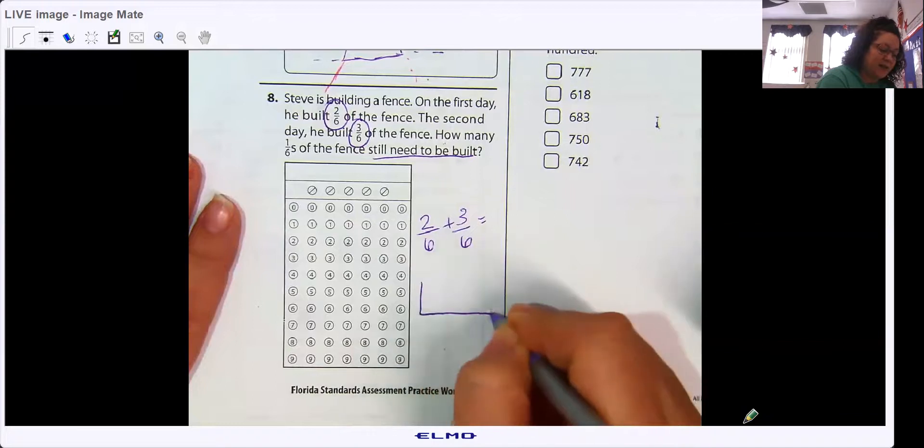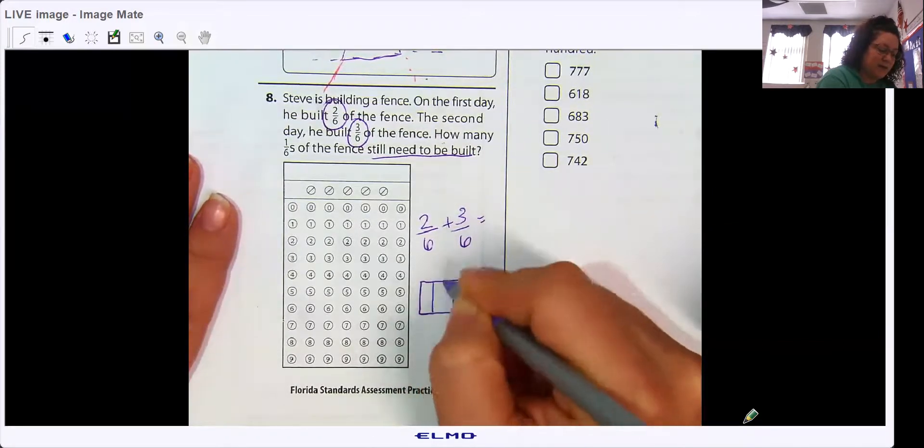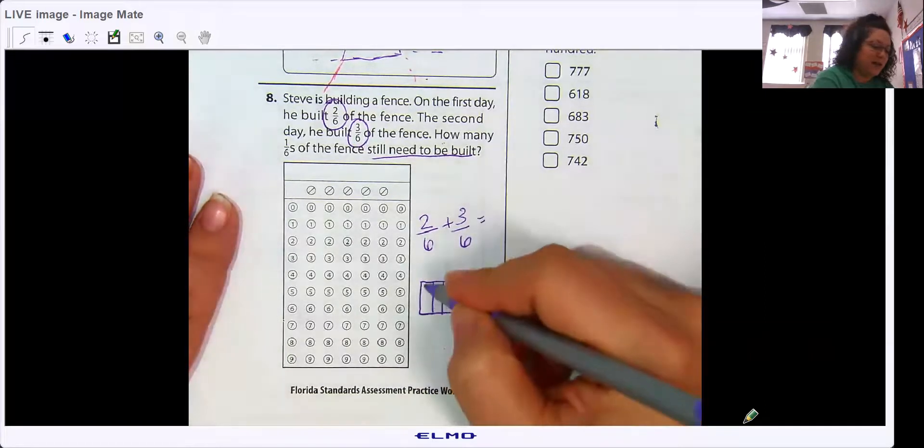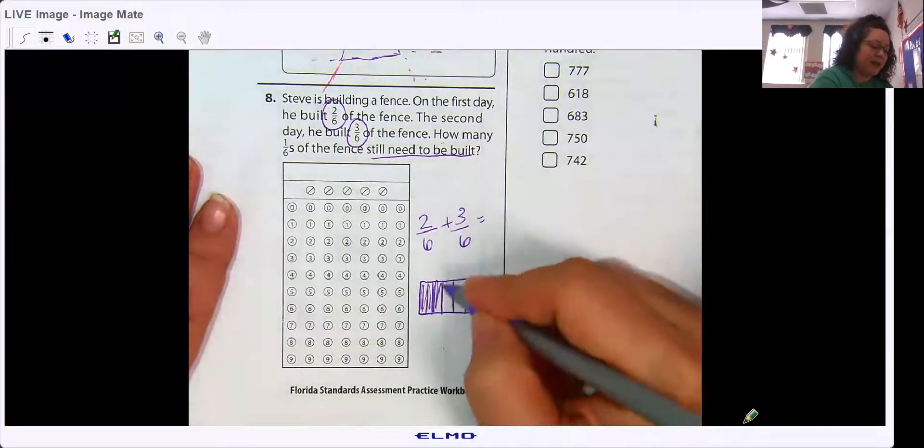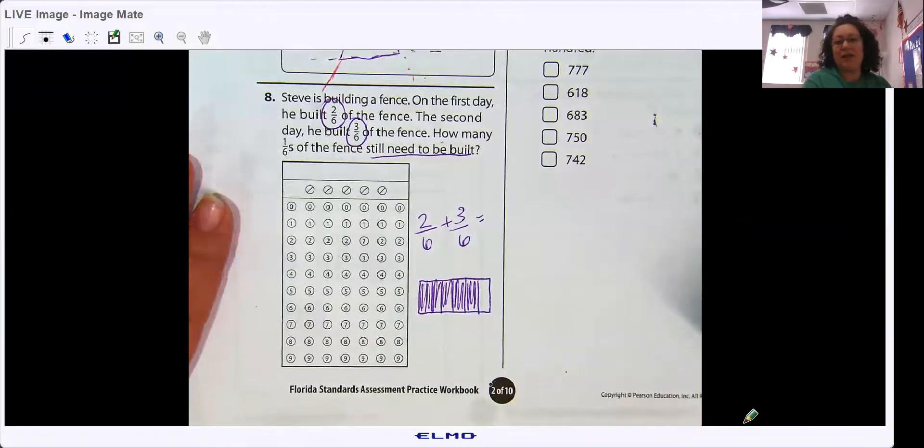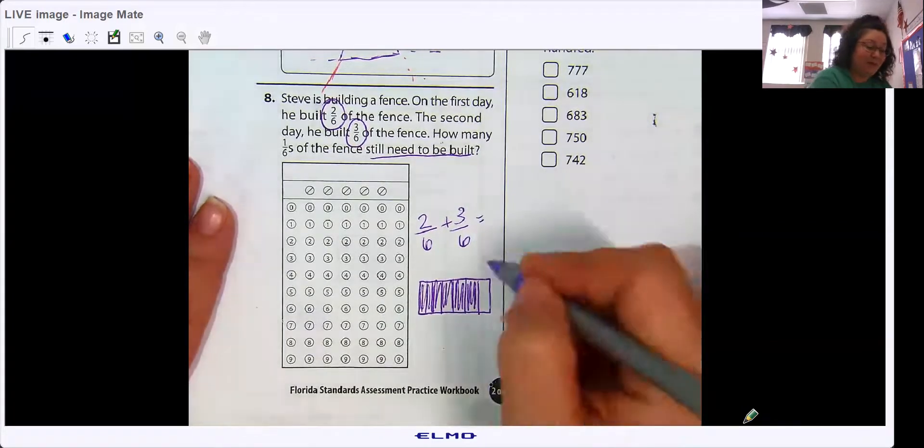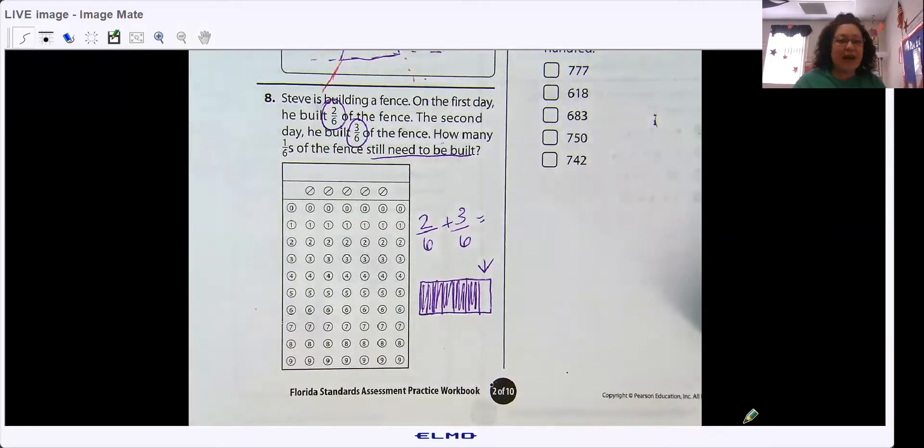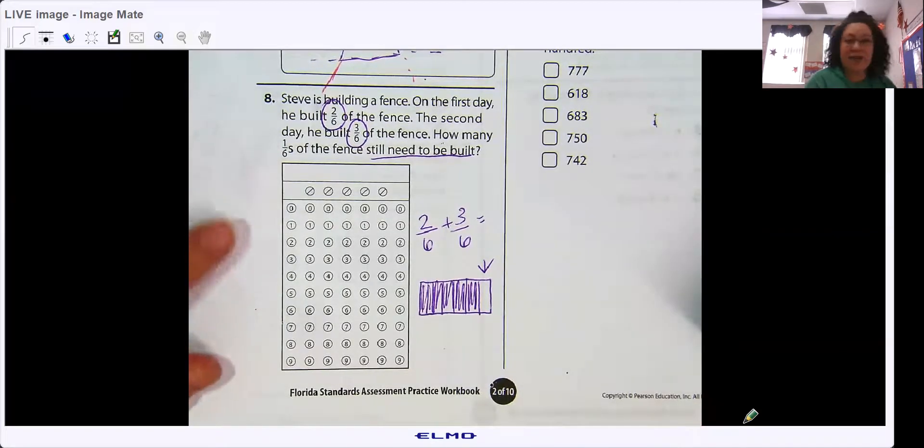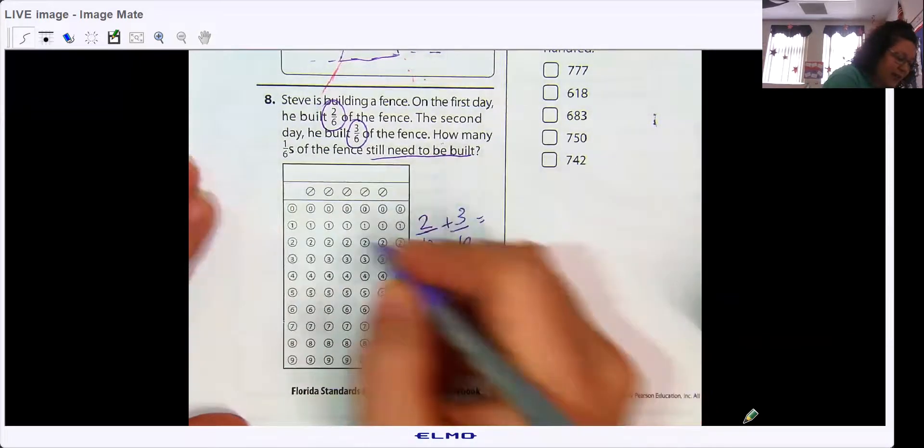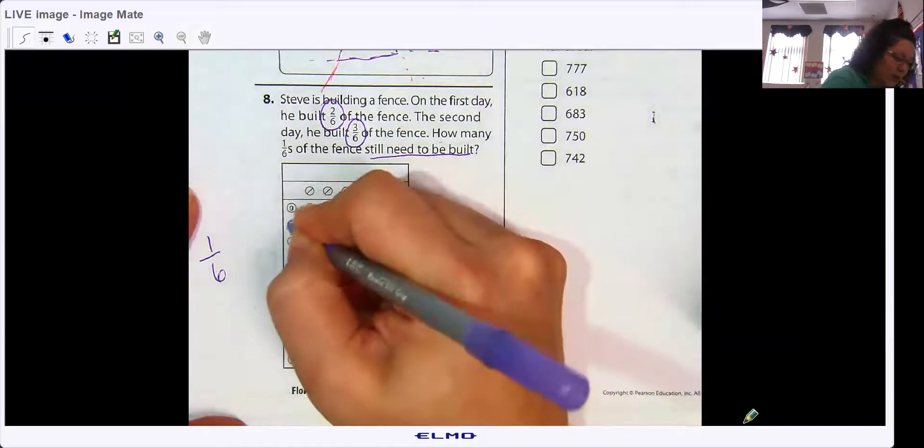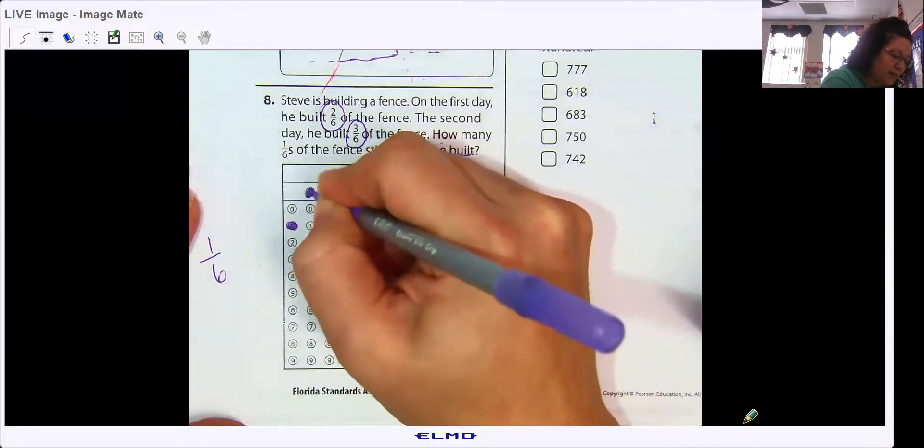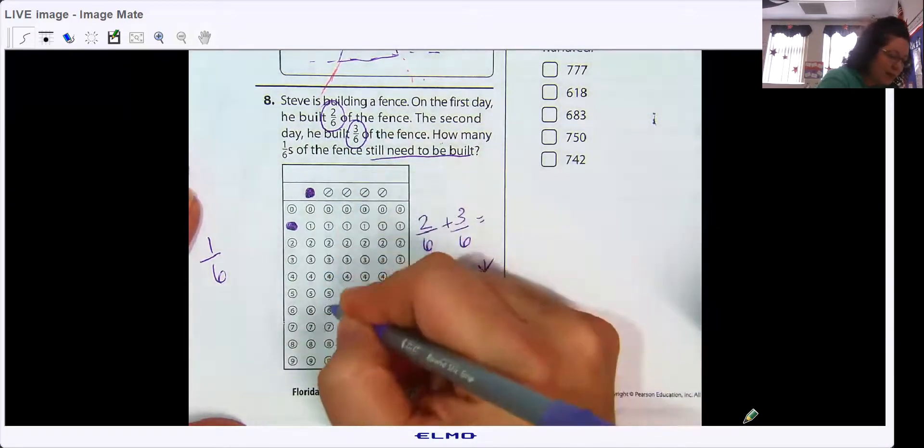So if he had a fence in sixths. First day, he built two sixths. Then he built three sixths. How much does he have left over to build? Just one sixth. Drawing pictures helps. So this is where we have our fraction thing. So we have one sixth. So we would color in one, and then we would bubble the fraction symbol, and then we would bubble in six.